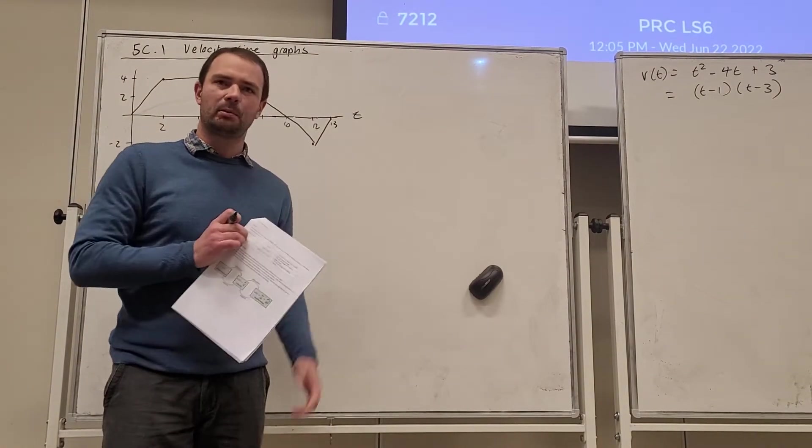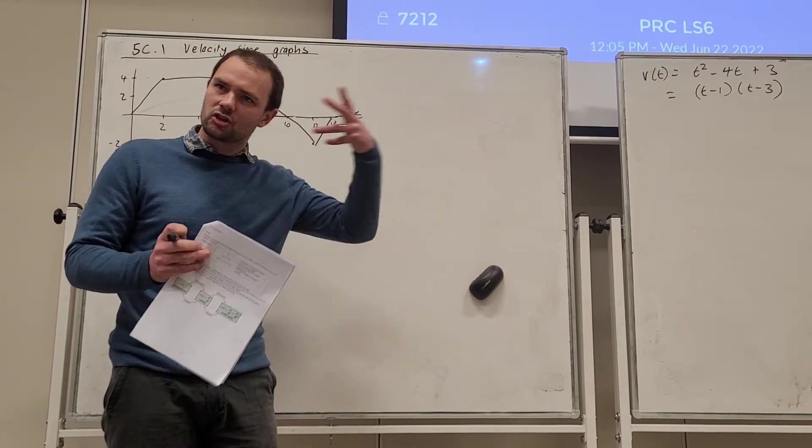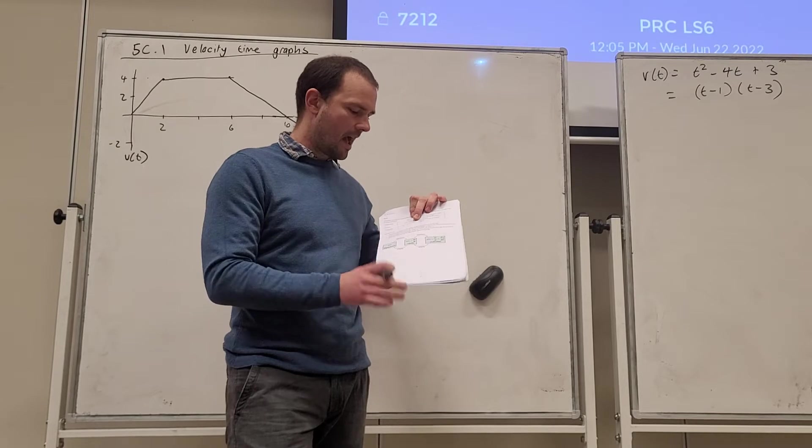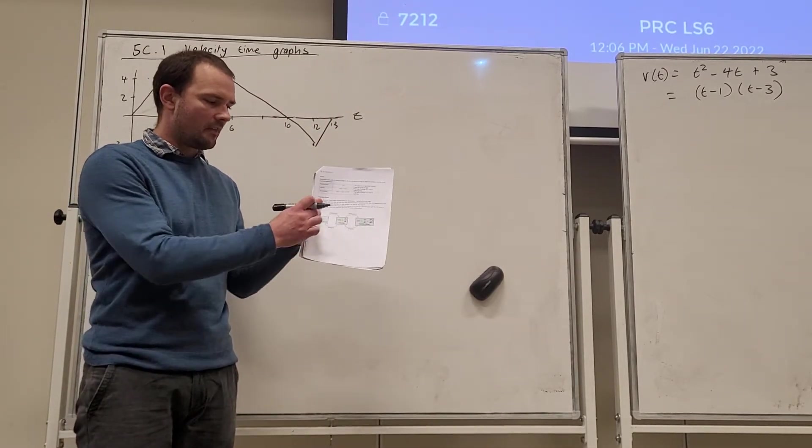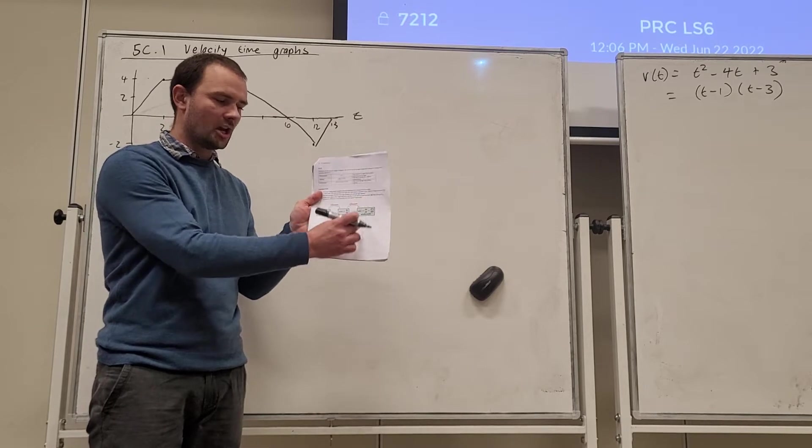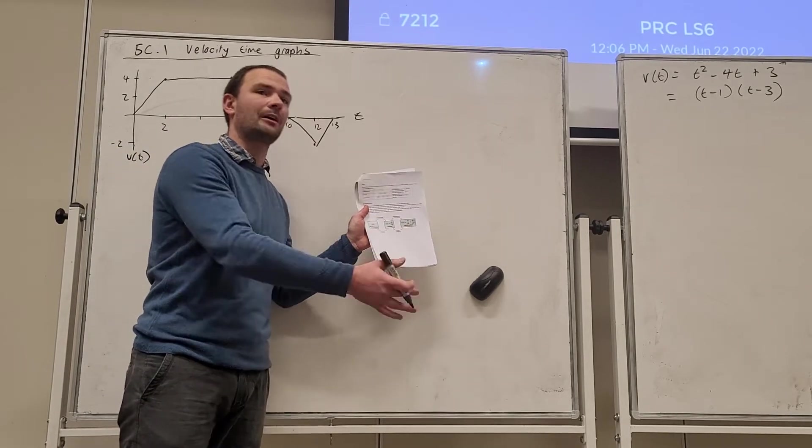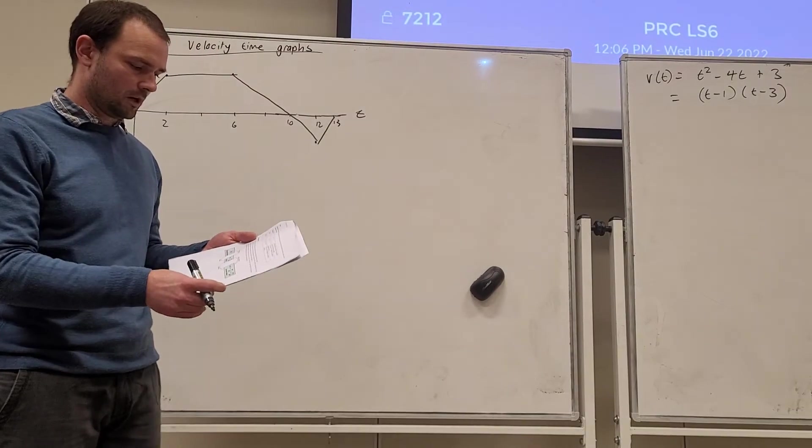We've got displacement, we represent with S of T. V of T, velocity is the rate of change of displacement. And A of T is the rate of acceleration, that's the rate of change of velocity. And then we know how to get them from differentiation, the link between them, and so now we recognize we can obtain it going backwards using integration. And so that's what we're going to be doing a little bit of here as well.